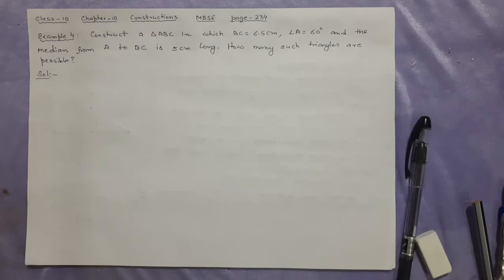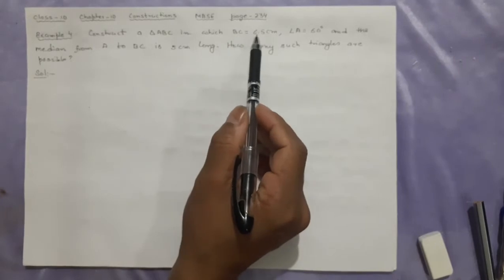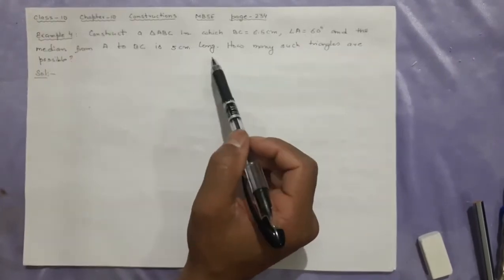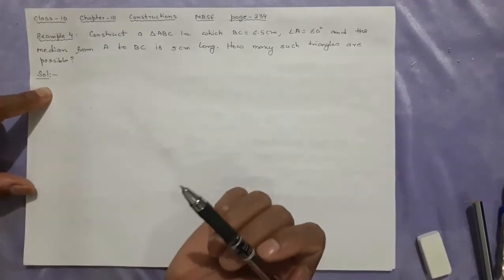Here we have the example. It's quite similar to example 3, but the only difference is here in place of altitude we have the median. What you have to do is draw a triangle with BC equal to 6.5 cm, angle A is 60 degrees, and the median from A to BC is 5 cm long. How many such triangles are possible?